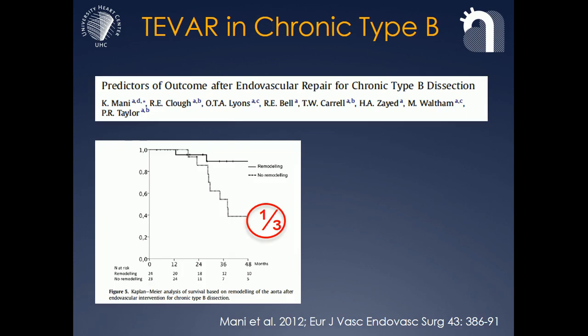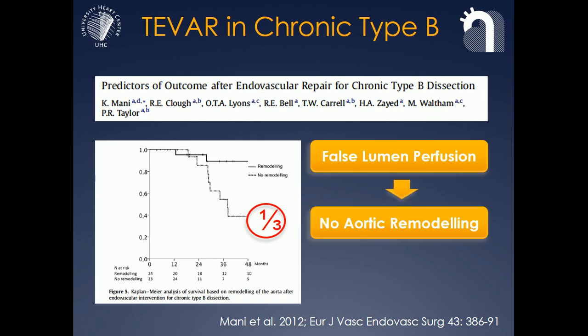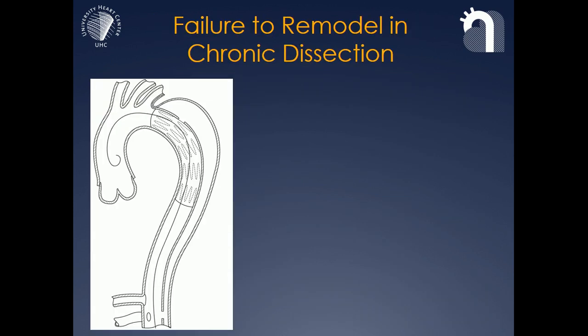I'd like to show you some slides of studies that have looked at TEVAR and chronic dissection. What these studies usually show is that about a third of patients that are treated with TEVAR with stent grafting down to the true lumen don't do well, and they enlarge their false lumen, and they rupture, and they usually die of the rupture.